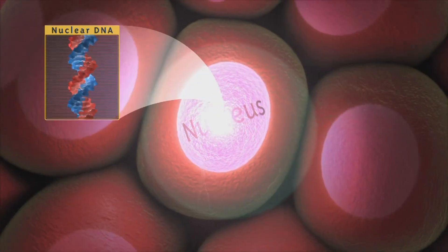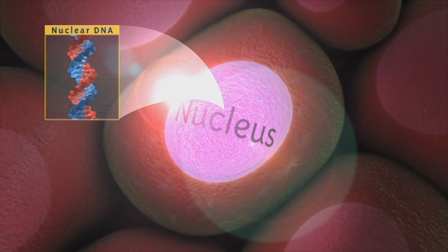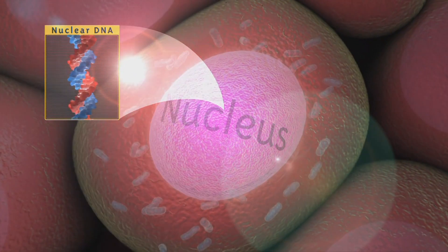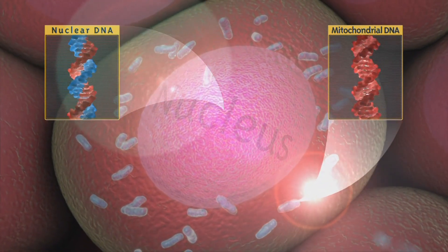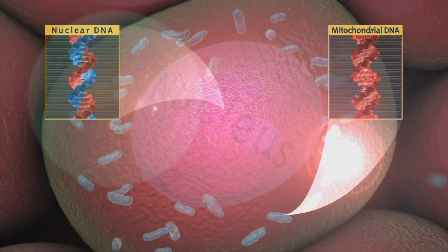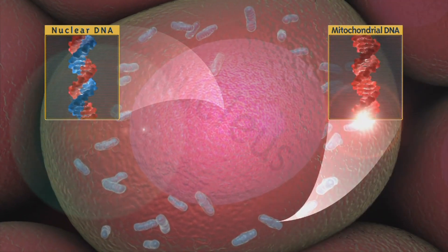Most DNA is packed tightly into the cell's nucleus, but there is also a tiny loop of genetic material called mitochondrial DNA, or mtDNA, in a part of the cell called the mitochondria.